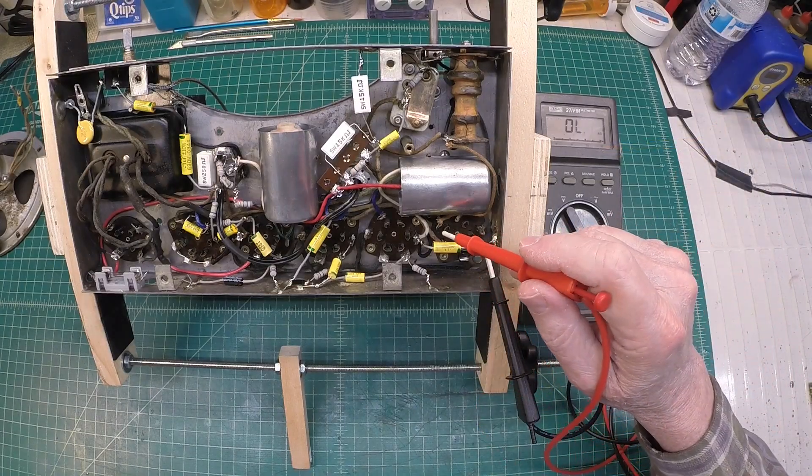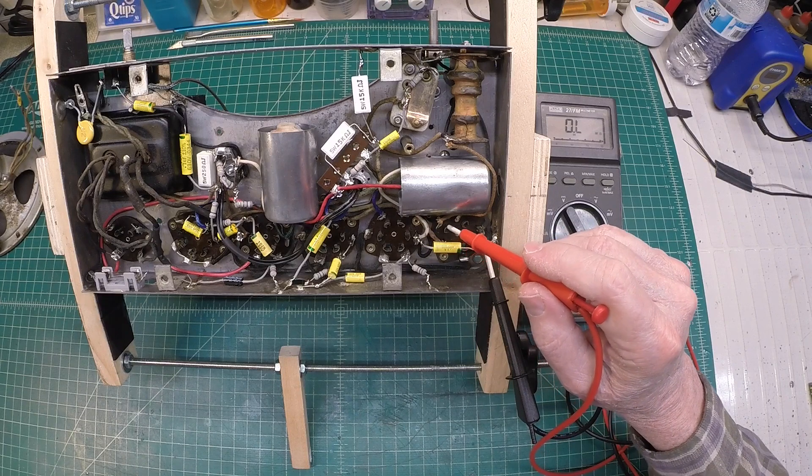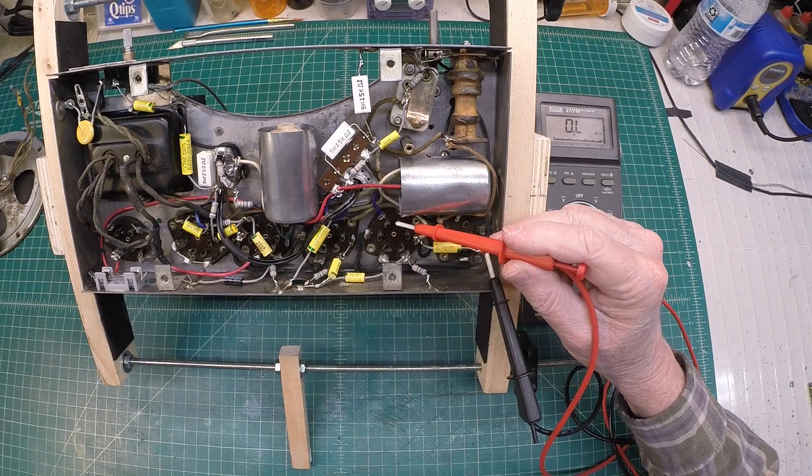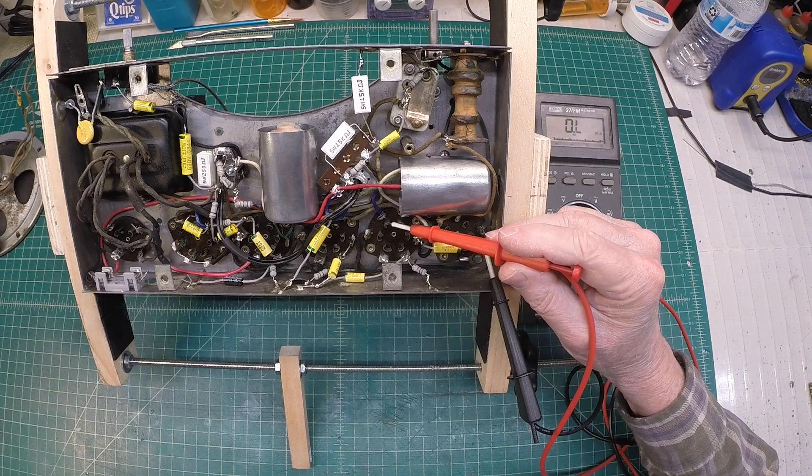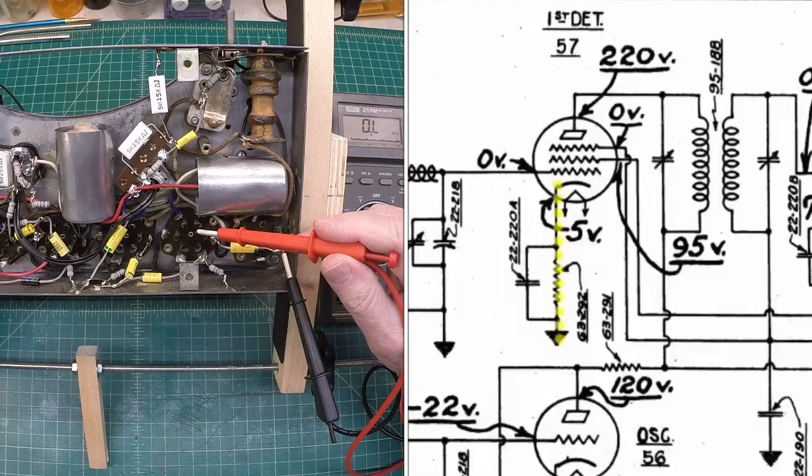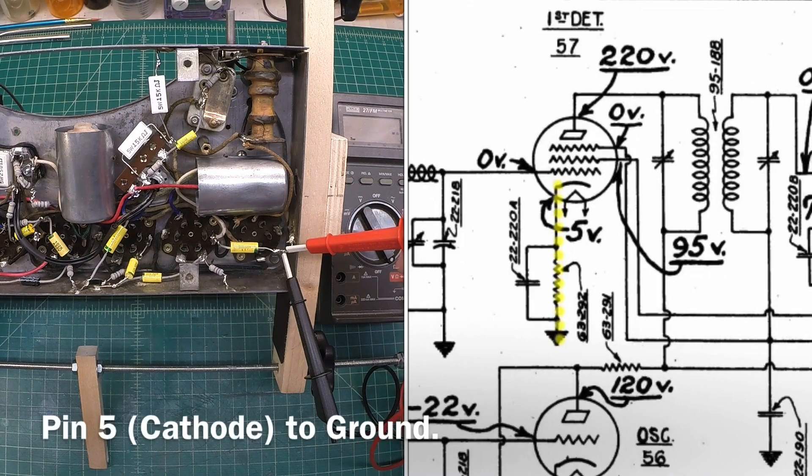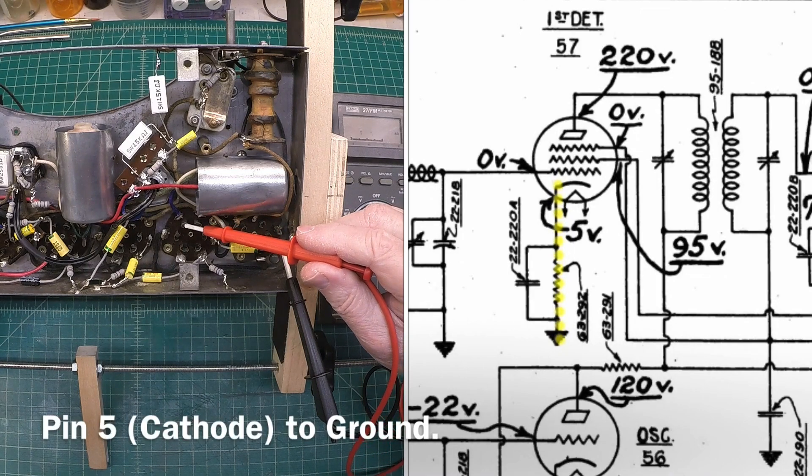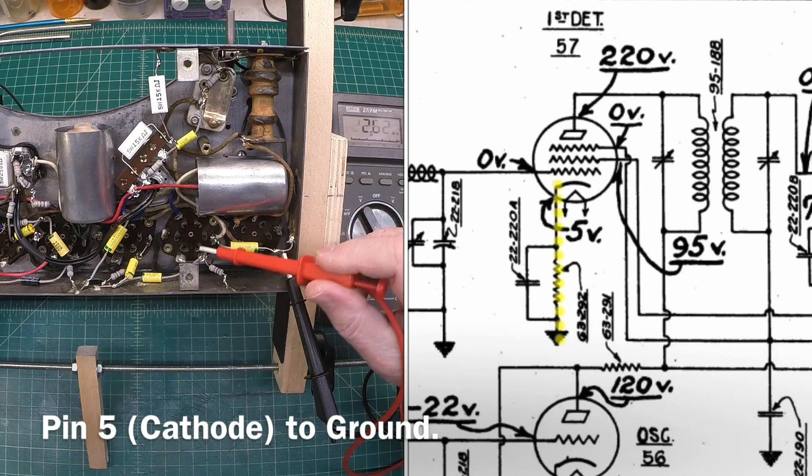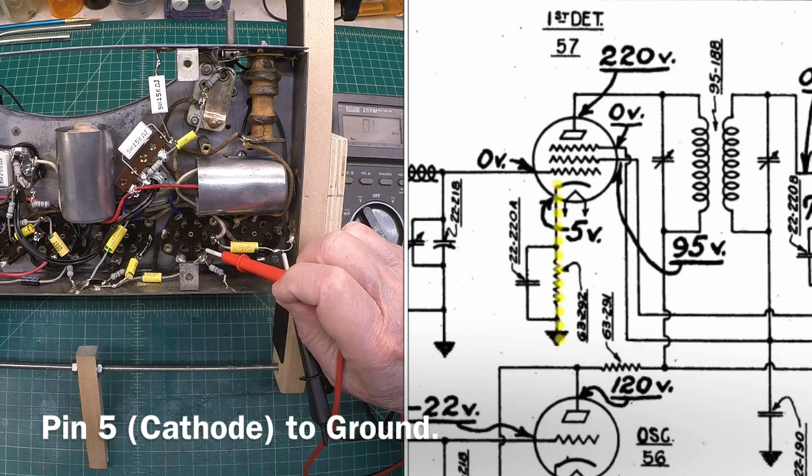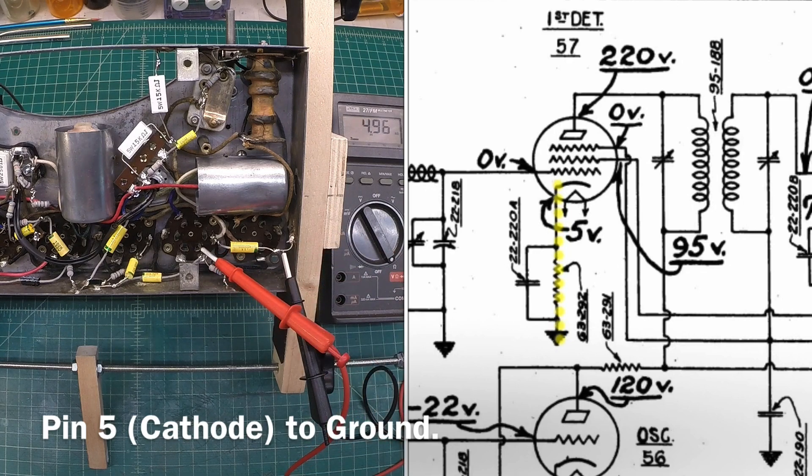We'll move over to the 57 tube which is adjacent here to the 56. You can see I've got the plate color-coded in red. So we want to go from the cathode to ground. I'll just leave my ground connection here. Pin 2, 3, 4, 5 and of course we're just testing through this resistor right here. And you can see we're just shy of 5k at 4.96 and that's correct. This was actually called out at 5.4k and you can see I went back with a 5k resistor.